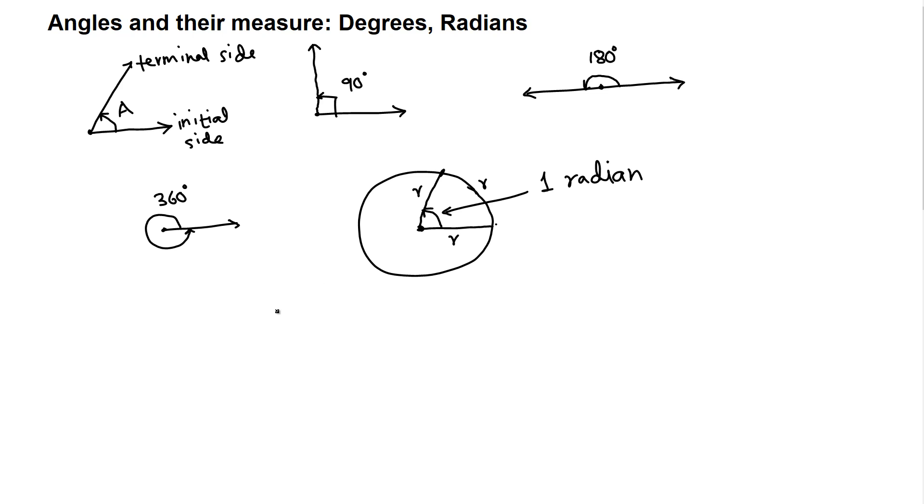So if we have 360 degrees going around one full rotation, one full revolution, that will be 2π. So 360 degrees, that's one revolution, is the same as 2π radians.